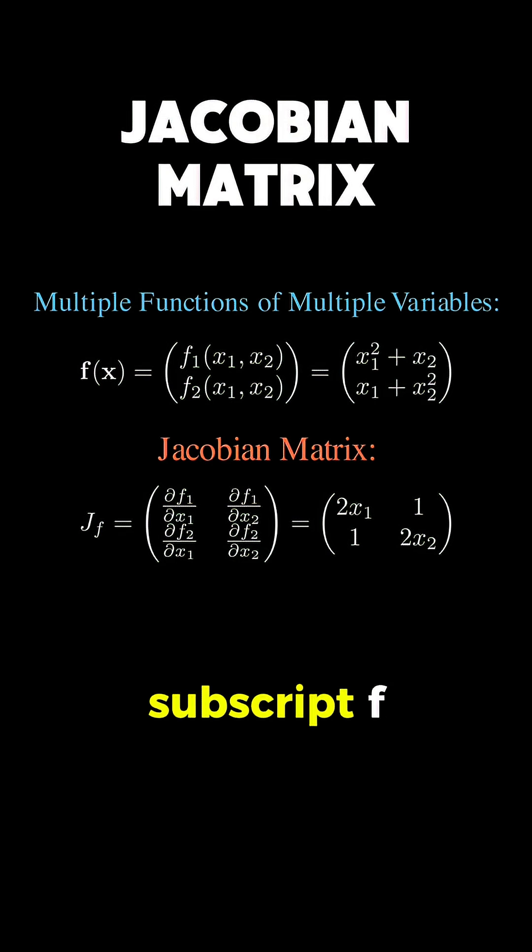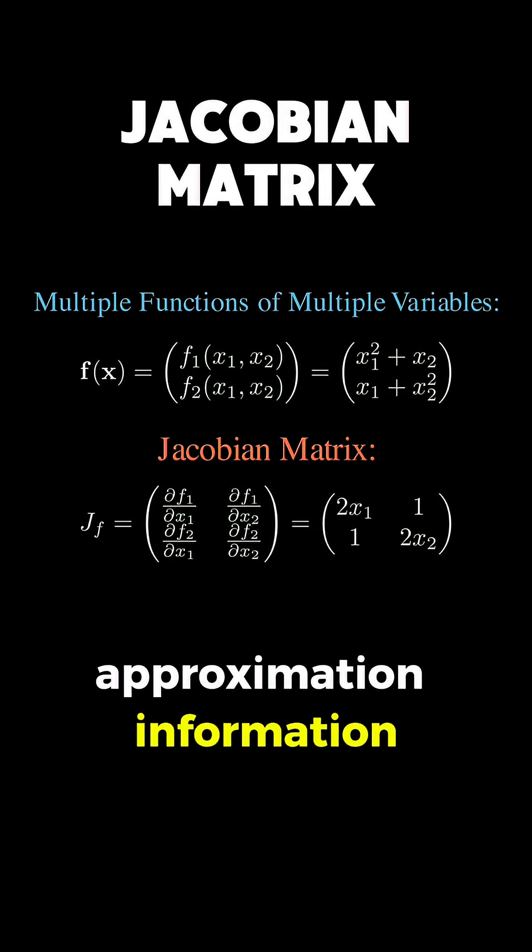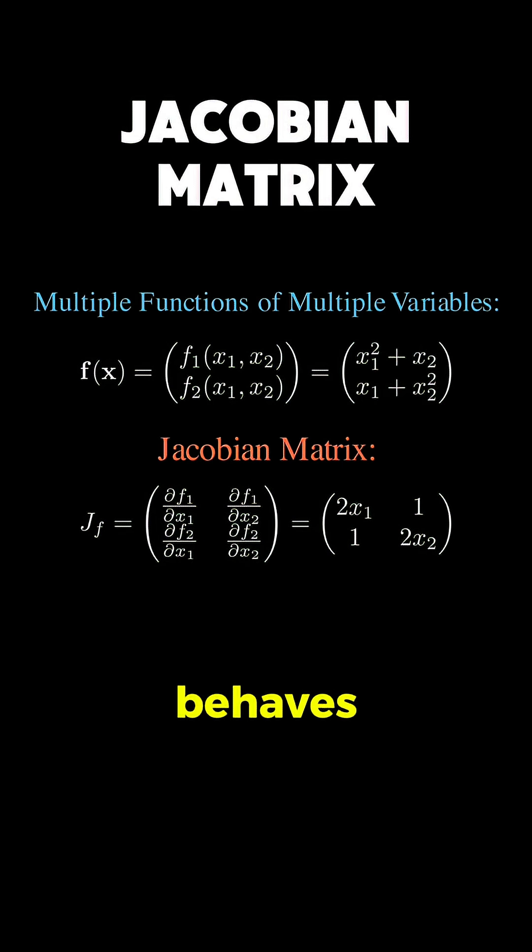Denoted as J subscript f, which contains all the local linear approximation information about how our vector-valued function behaves.